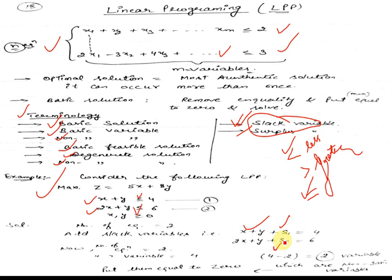In the second equation we have s2, which is also a slack variable. These give us two equations: equation number 1 and equation number 2. Just remember these two equations: x + y + s1 = 4, and 2x + y + s2 = 6.